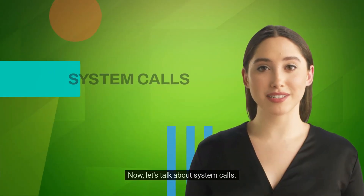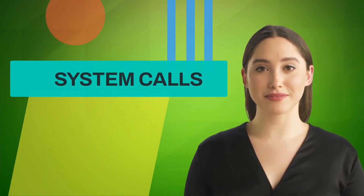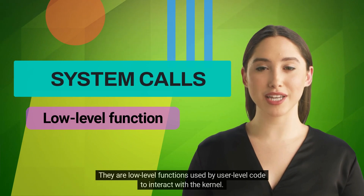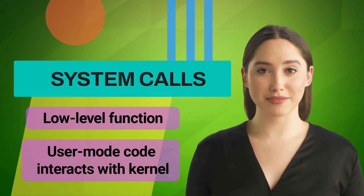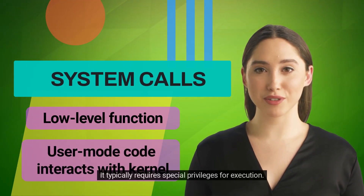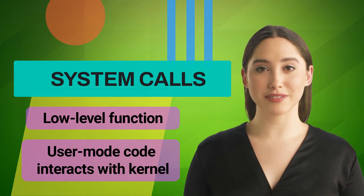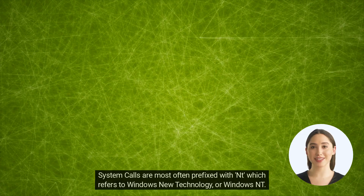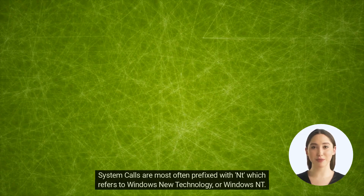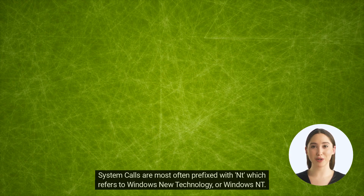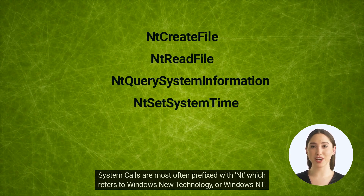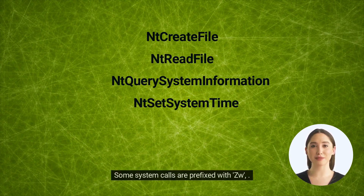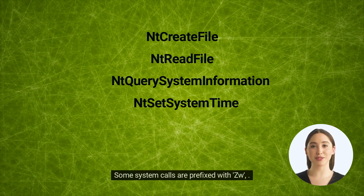Now let's talk about system calls. They are low-level functions used by user-level code to interact with the kernel, and typically require special privileges for execution. System calls are most often prefixed with NT, which refers to Windows New Technology or Windows NT. Some system calls are prefixed with ZW.